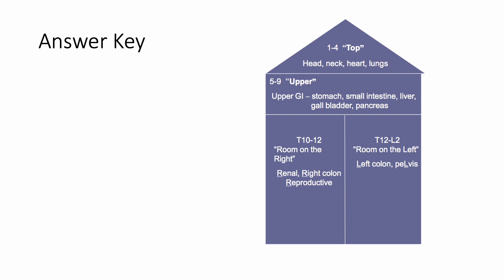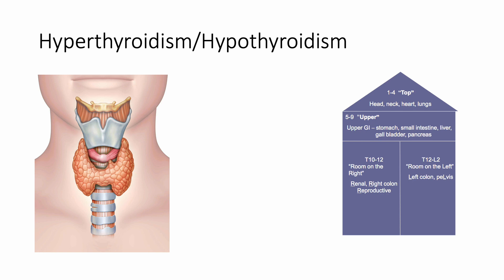This is honestly all you have to know to get all of these questions. Let's run through some examples. If someone presents with hyperthyroidism or hypothyroidism — they're super jittery and sweaty with hair and nail changes, or sluggish and gaining weight with skin changes — they'll give you answer options like T1, T7, T10, L2. All you have to remember is to choose T1 through T4. The thyroid is in the neck. That's all you have to know, and then you move on.